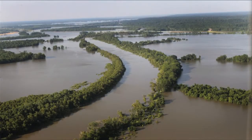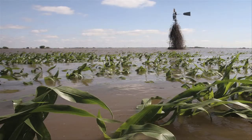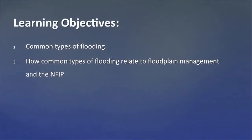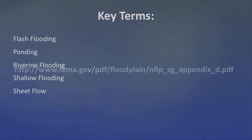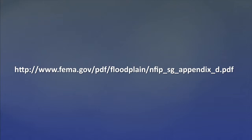Flooding is most often associated with rivers leaving their banks, but flooding can also occur in places other than along rivers. In this video, we will discuss common types of flooding and their relationships to floodplain management and the National Flood Insurance Program, or NFIP. These key terms and acronyms will be used during this presentation. You can find the terms and their definitions at the web address on screen.